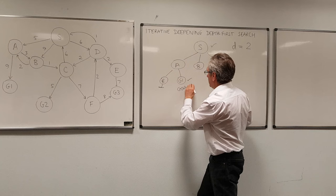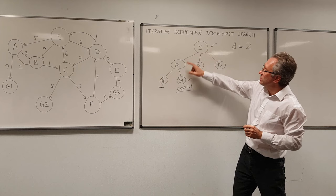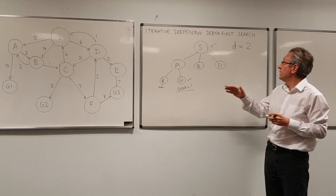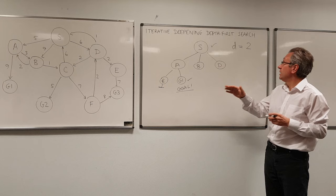So I've now found a plan which is only two steps. And what you can find with iterative deepening depth first search is that it can find an optimal plan, sometimes faster than breadth first search does because it does less work.